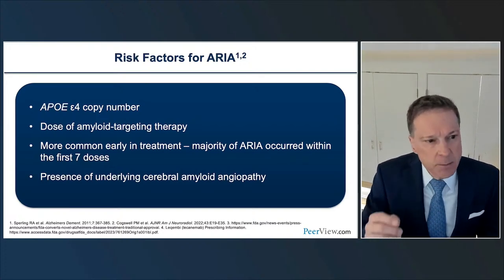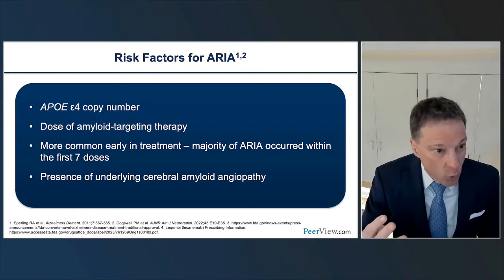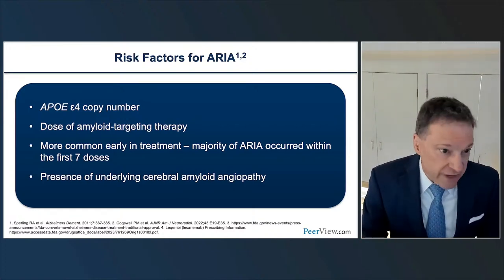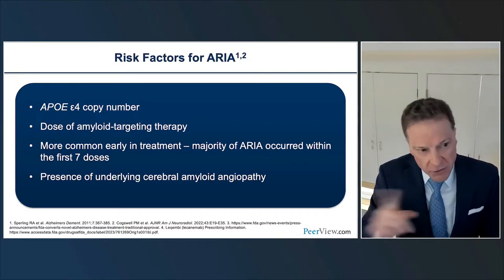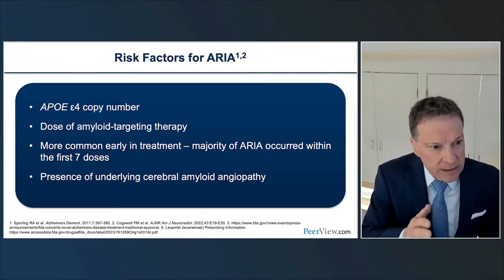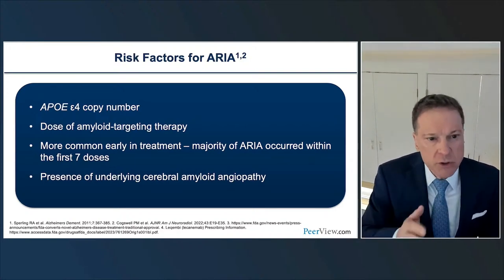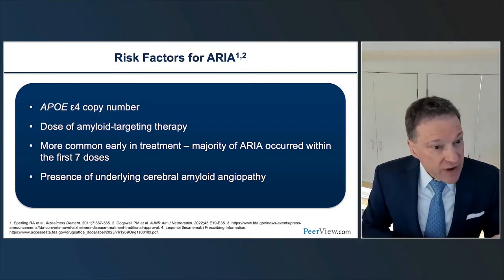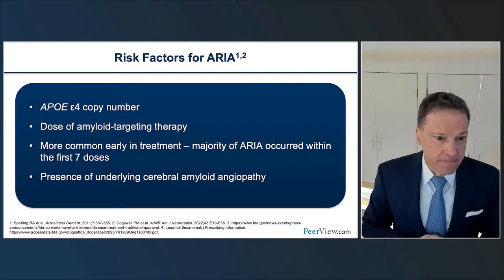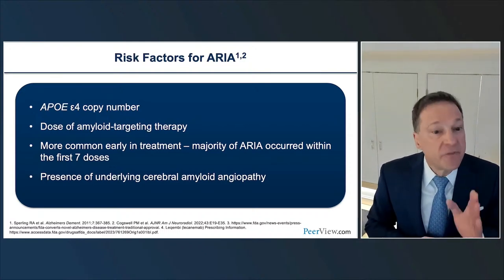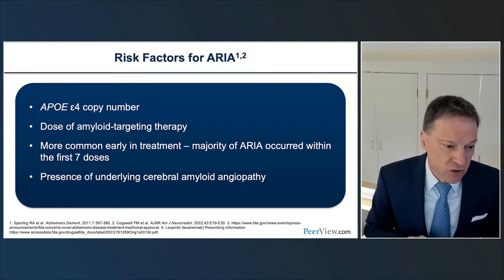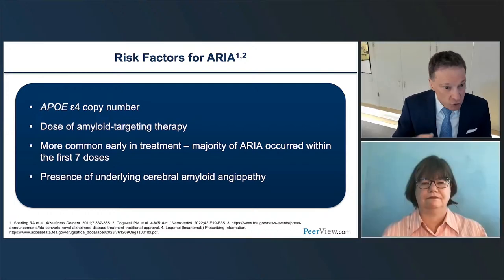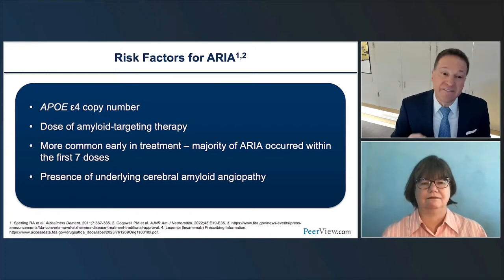The main risk factor is ApoE4 allele copy number; the more dose, the more likelihood of complications. These ARIA complications occur most commonly in the early phases of treatment — the majority of ARIA occurs within the first seven doses. Another risk factor is the presence of cerebral amyloid angiopathy (CAA). CAA is a condition in which there is significant amyloid deposition within the brain and vasculature. When we start to remove amyloid from the vasculature, there will be a very high likelihood of ARIA.